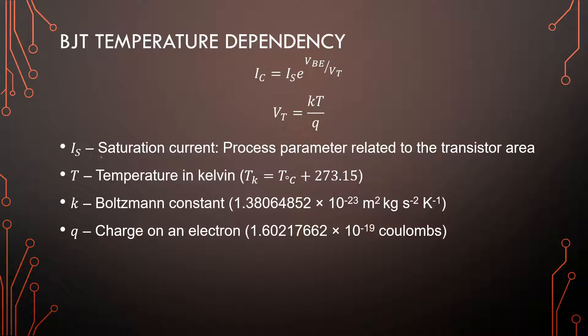So in this equation IS is the saturation current and that is a process parameter for a transistor. Every transistor will have one of these. It's 10 to the power of minus 15 in that area. VBE is what we put in. Thermal voltage is related to the current temperature.